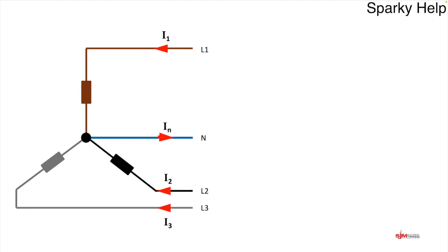Let's have a look at this star-connected circuit with a neutral connected to the star point. If currents are flowing in, what would flow back — if anything — along the neutral?